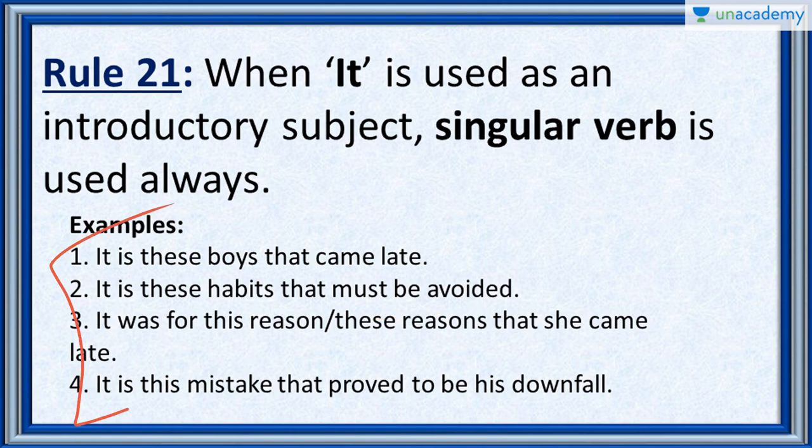In all of these examples, you will see that is, is, was, is. These helping verbs are used after 'it' when the word 'it' has been used as an introductory subject. That means the word 'it' has commenced the sentence.